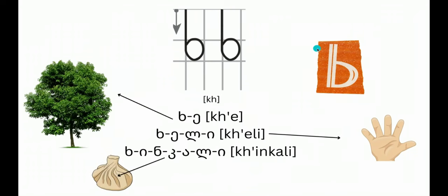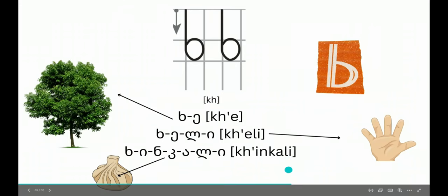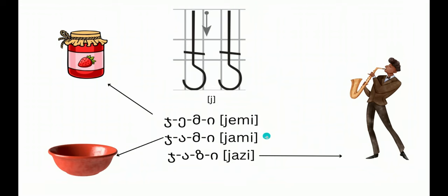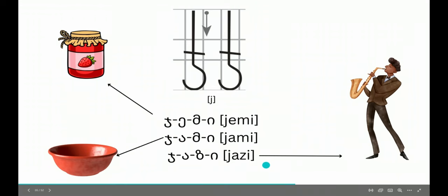Kh looks like English B. Kh - kheli, khinkali. J - jemi, jami, jazi.